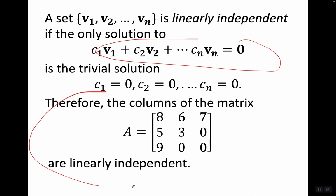Since that's the only solution — the trivial solution — we can say: therefore, the columns of the matrix [8, 6, 7; 5, 3, 0; 9, 0, 0] are linearly independent.